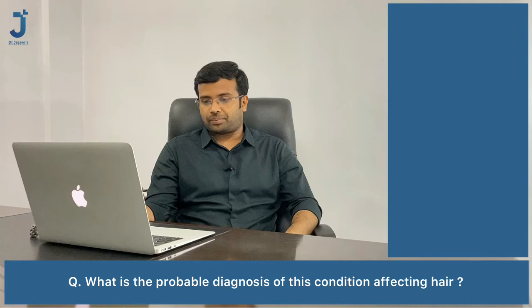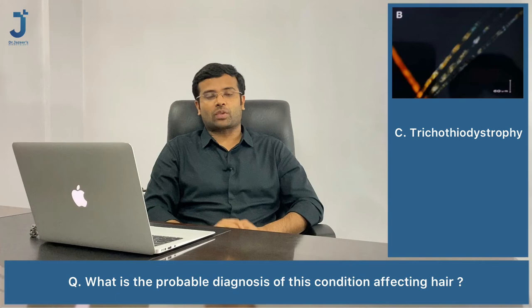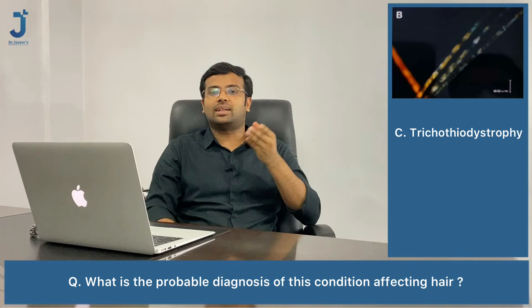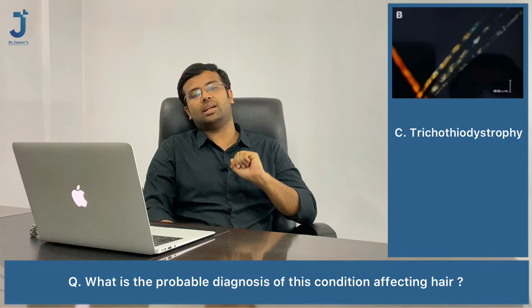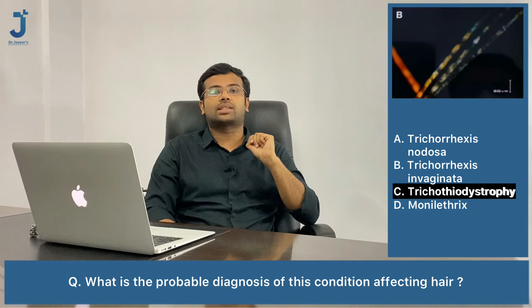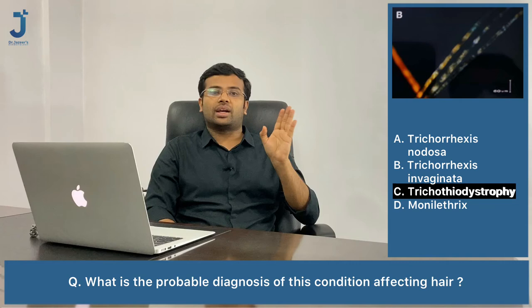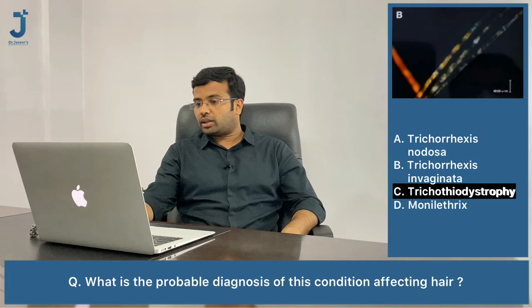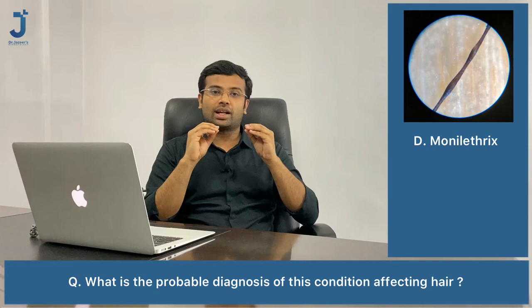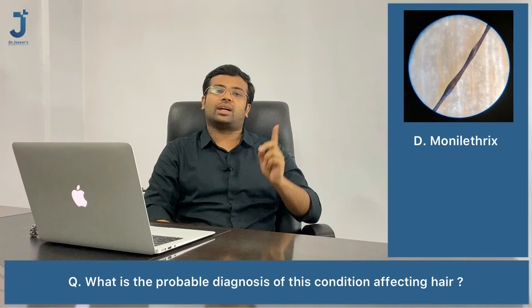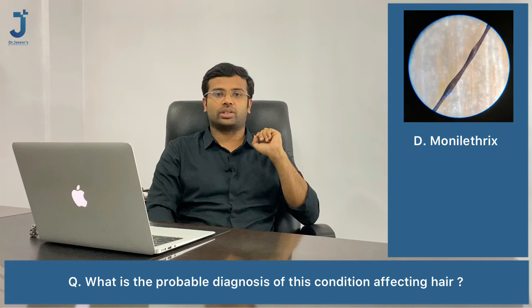In trichothiodystrophy, you find tiger tail banding on polarizing microscopy. This is an autosomal recessive condition with brittle hairs that are deficient in sulfur. In monilethrix, a regularly banded ribbon sign is seen — this is a rare genodermatosis.